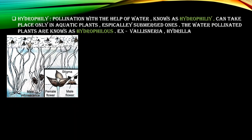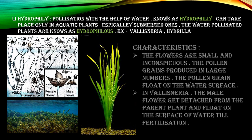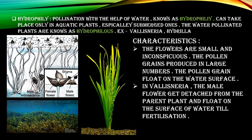The next type of pollinating agent is hydrophily, which you can find in water plants like Vallisneria and Hydrilla — mostly aquatic plants which are submerged. The flowers are small and inconspicuous. Pollen grains are also produced in large numbers, as in wind pollination. Pollen grains are lighter and float on the surface of water. In Vallisneria, the male flower gets detached from the parent plant and floats on the surface of water until fertilization, carried up to the female plants.